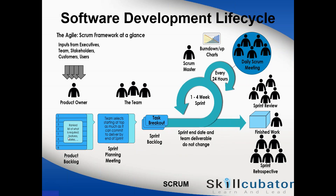The second most important responsibility of the Product Owner is to prioritize the backlog. A backlog may have 300 PBIs, but not all are of equal importance. Some may be critical, some less important, and some may not need implementation at all. The Product Owner decides the weight of each PBI and prioritizes based on the business value it gives to the organization.